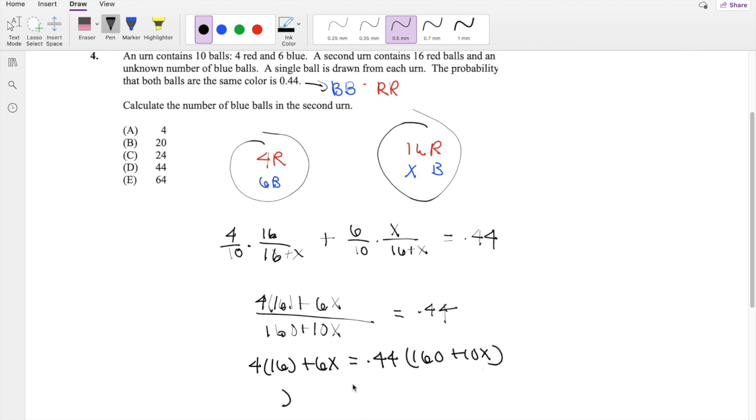So I can just multiply 4 times 16. That's 64 plus 6x is equal to 0.44 times 160, which is just 70.4 plus 4.4x.